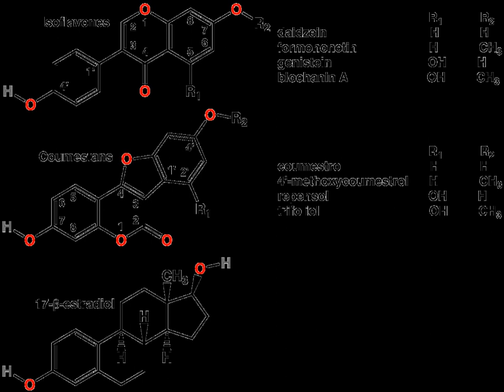Indications for soy-based formula include infants with galactosemia and hereditary lactase deficiency, and situations in which a vegetarian diet is preferred. In some countries, phytoestrogenic plants have been used for centuries in the treatment of menstrual and menopausal problems, as well as fertility problems. Plants shown to contain phytoestrogens include Pueraria mirifica and its close relative kudzu, angelica, fennel, and anise. In a rigorous study, the use of red clover as a source of phytoestrogen has been shown to be safe but ineffective in relieving menopausal symptoms. Black cohosh is also used for menopausal symptoms but does not contain phytoestrogens. Panax ginseng contains phytoestrogens and has been used for menopausal symptoms.